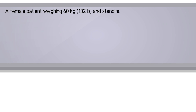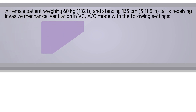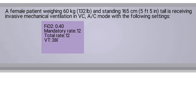A female patient weighing 60 kilograms or 132 pounds and standing 165 centimeters or 5 feet 5 inches tall is receiving invasive mechanical ventilation in volume-controlled assist-control mode with the following settings: an FiO2 of 40%, mandatory rate of 12, total rate of 12, tidal volume of 380 milliliters, peak inspiratory pressure of 28, and a PEEP of 5.